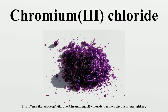CrCl3·6H2O + 6SOCl2 → CrCl3 + 6SO2 + 12HCl. The hydrated chlorides are prepared by treatment of chromate with hydrochloric acid and methanol. In the laboratory, the hydrates are usually prepared by dissolving chromium metal or chromium oxide in hydrochloric acid.